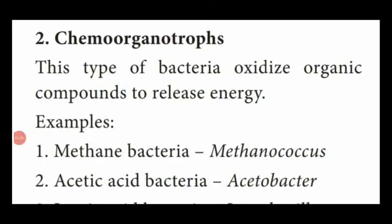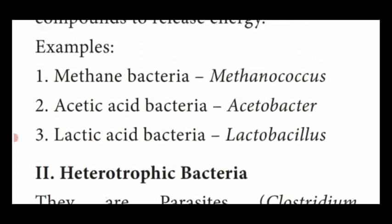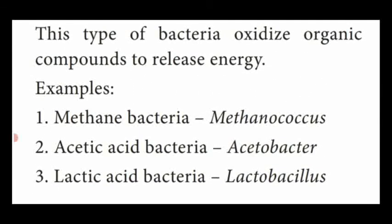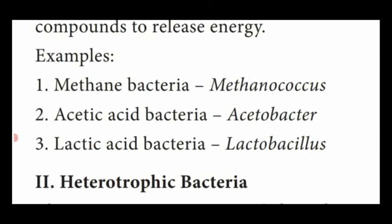The other type of chemo-autotrophic bacteria is chemo-organotrophs, which oxidize organic substances to release energy. Examples: methane bacteria (Methanococcus), acetic acid bacteria (Acetobacter), and lactic acid bacteria (Lactobacillus). Lactobacillus lactis converts milk into curd by producing lactic acid — that is the example of chemo-organotrophs under lactic acid bacteria.